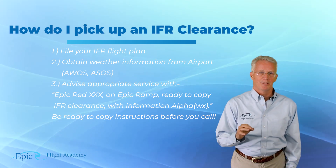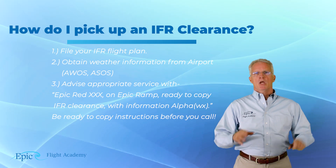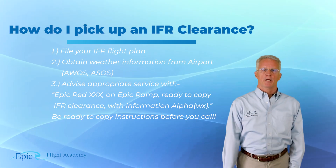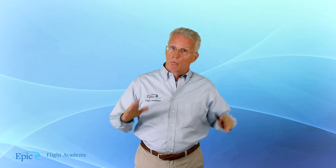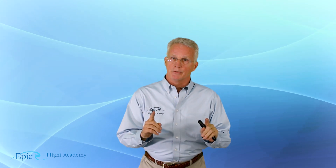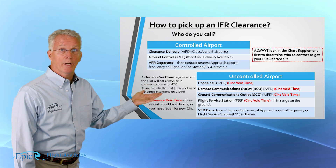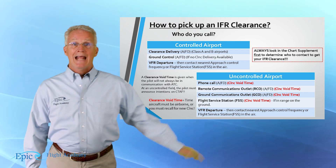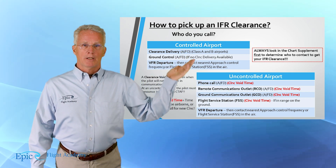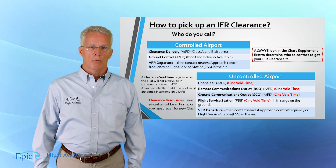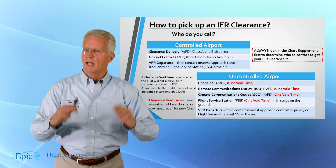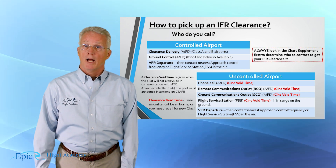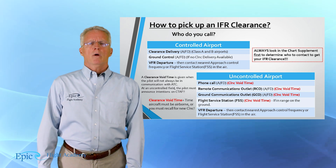Number three, advise the appropriate service that you are ready to copy your IFR flight plan. Please be ready to copy when you tell ATC you're ready — that means your cockpit is organized, your kneeboard and pen are ready. Now, who do we call to pick up the clearance? It depends on whether it's a controlled or uncontrolled airport. At a controlled airport, you're going to call clearance delivery. Most Bravo airports and many Charlie airports have clearance delivery. If they don't, you'll pick up your IFR clearance from ground control.